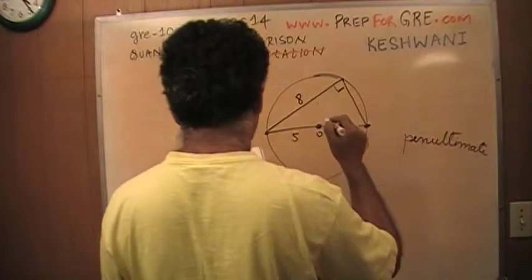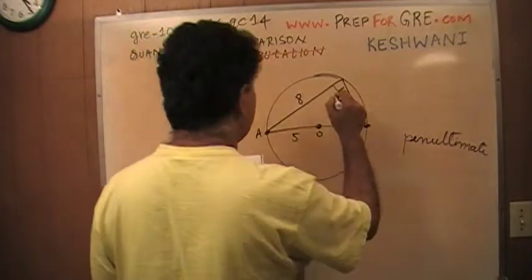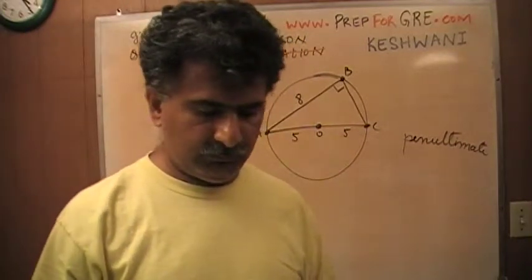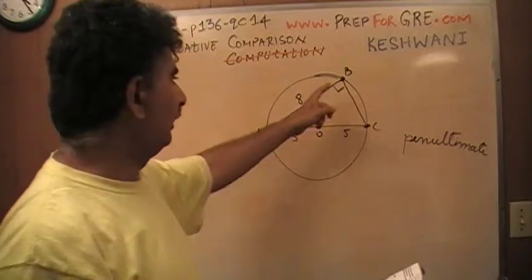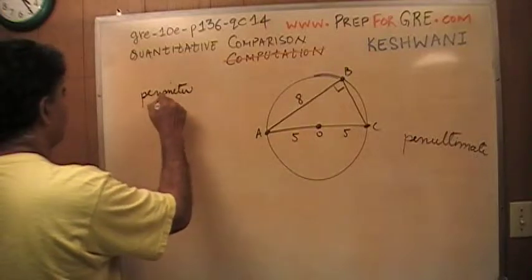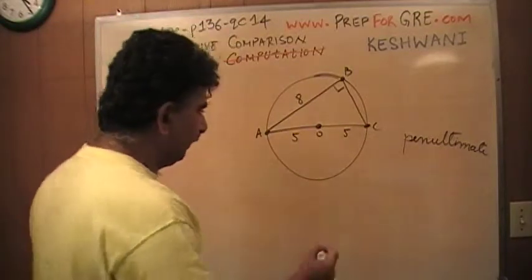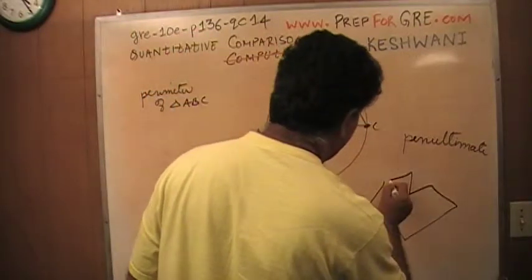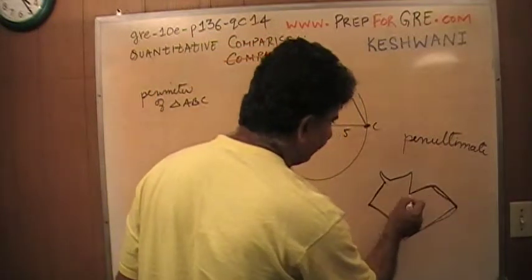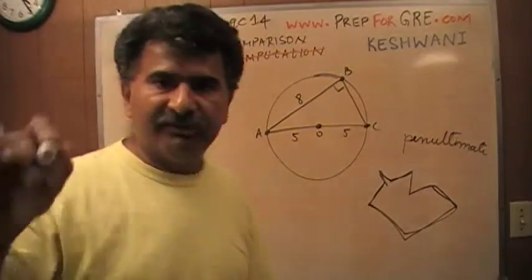We are told one side is 8. The question is asking us to compare the perimeter of triangle ABC. What does perimeter mean? The perimeter is when you add up all the sides — this side plus this side plus this side — all the way around. You add up all the sides; that's called the perimeter, the distance around the figure.